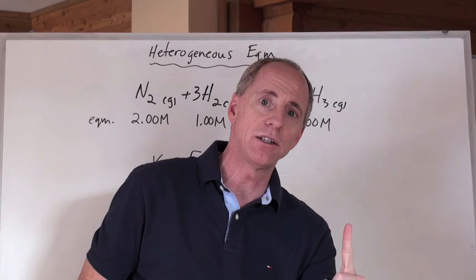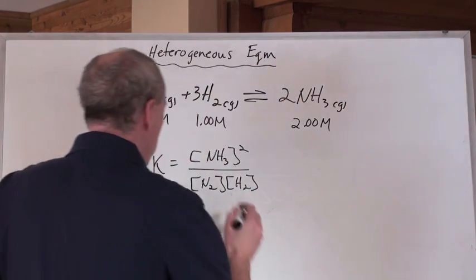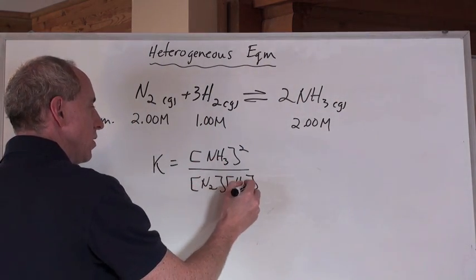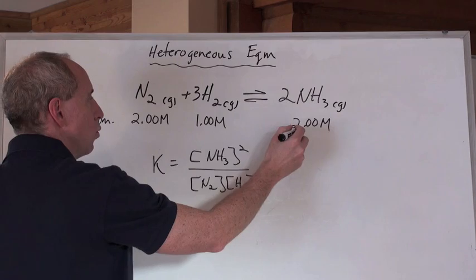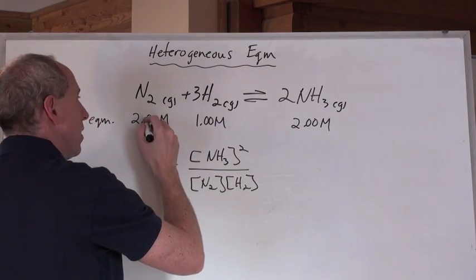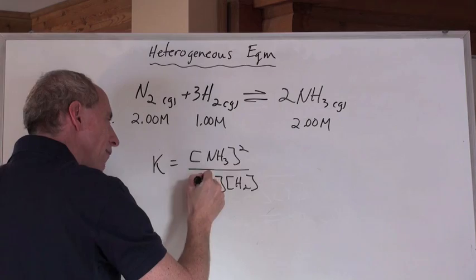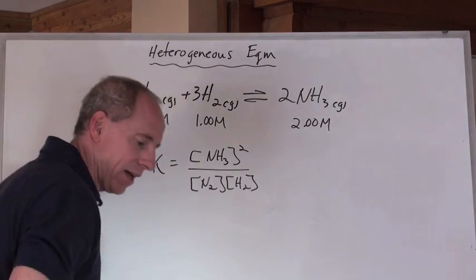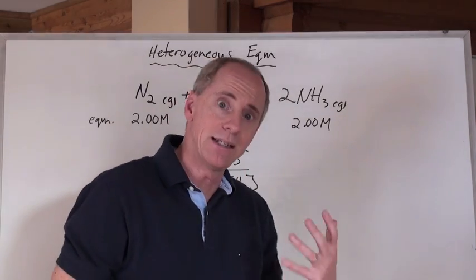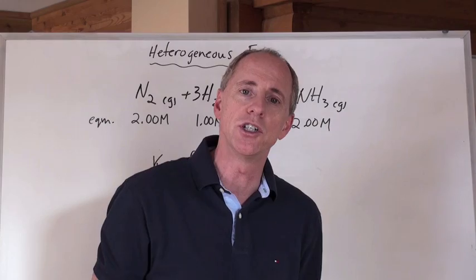and there's only one K value at a particular temperature. But could you have different concentrations here, whatever these concentrations would be in this condition right now, 2, 1, and 2, but maybe you have different numbers here. Can you have different numbers here and arrive at that K value being identical to that first one? Well, absolutely, sure.